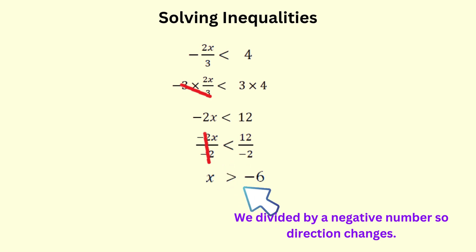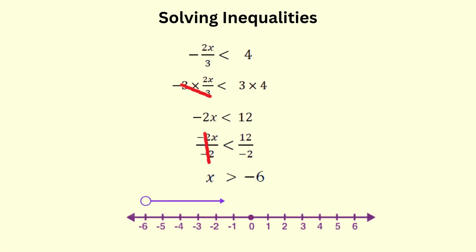We can represent our solution on a number line by putting an unshaded circle at negative 6 to indicate that negative 6 is not a part of the solution set, and our arrow pointing right since it's greater than.